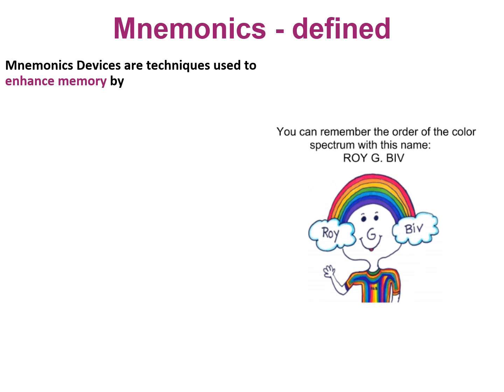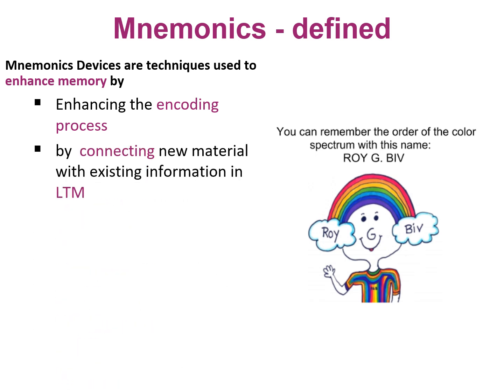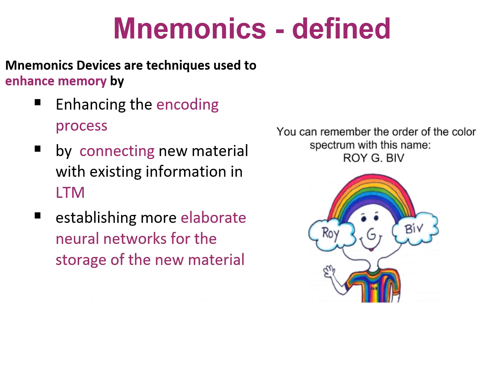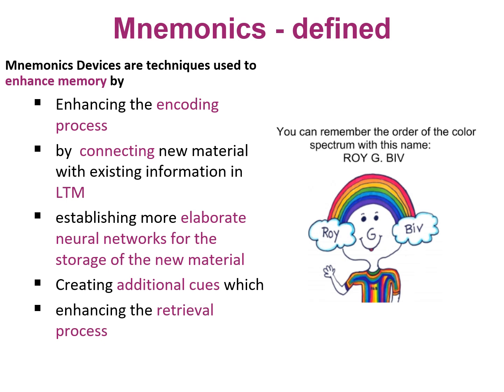First of all, mnemonics. They are techniques that we use to enhance memory. They enhance the encoding process — the transfer from short-term memory to long-term memory — by connecting new material with existing material already stored in LTM. This creates more elaborate and durable neural networks for the storage of that new material. The payoff is that we generate more cues, which help with retrieval — whether that cue is the first letter (acronyms and acrostics), a location (method of Loci), or using a multimodal approach, which is what we do with song lines.